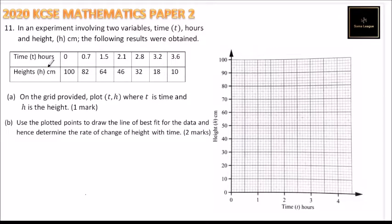So we have time in hours: 0, 0.7, 1.5, 2.1, 2.8.